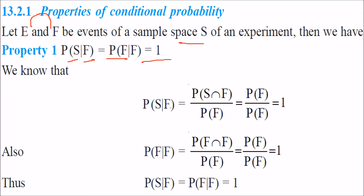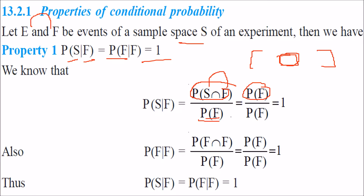P(S|F) is nothing but P(S∩F) divided by P(F). P(S∩F) — because if you take the total sample space and intersect it with F, you get F only. So you get P(F) over P(F), which is 1. How about P(F|F)? This is P(F∩F) divided by P(F), and anything intersecting with itself is itself, so P(F|F) is again 1. Thus P(S|F) = P(F|F) = 1.